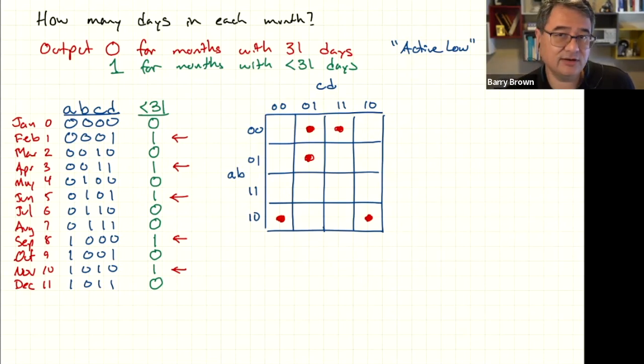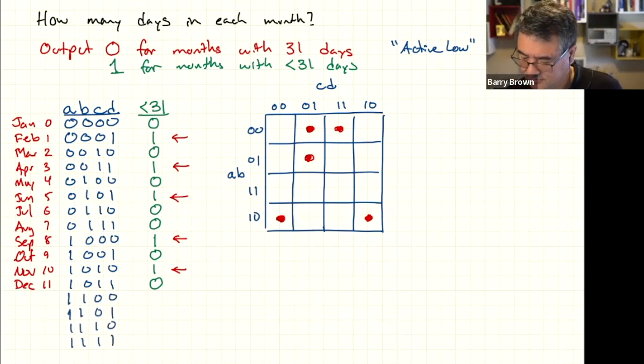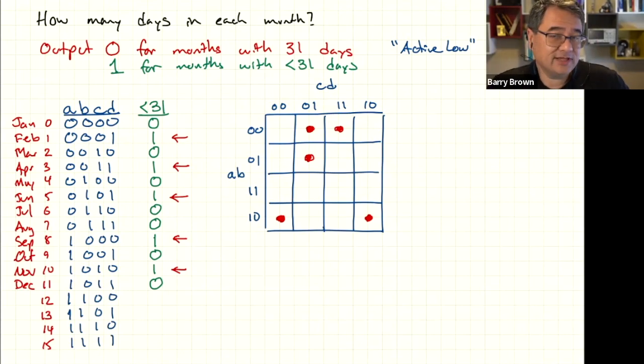But I'm going to go ahead and write those in. So those represent row 12, 13, 14, and 15. So those are the rows for months that don't exist. But we still kind of have to take them into account.